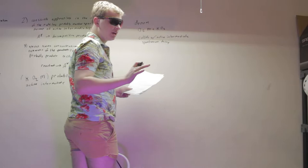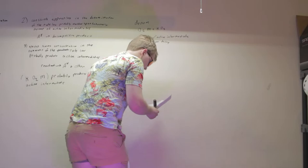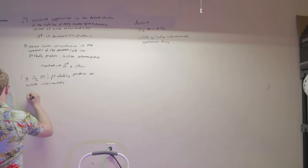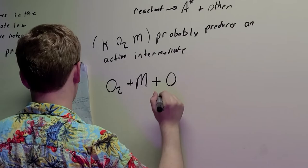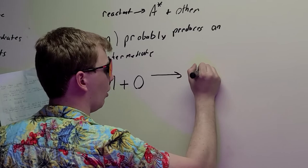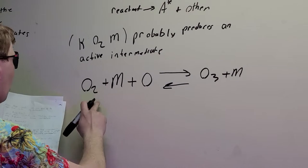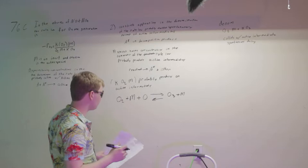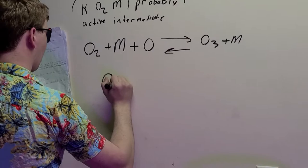And so using the numerator, we can generate a mechanism which we are going to suggest is O2 plus M plus a single oxygen. We can create O3 plus M. However, this can also go in reverse to create O2 plus M plus an O. And then from this denominator and from this mechanism here, we're going to use this to say that O3 plus O is going to go to O2.